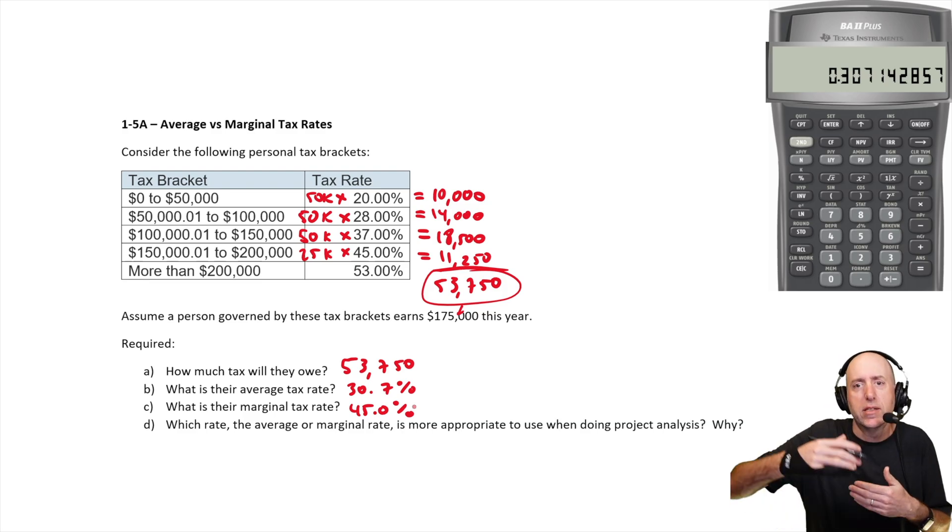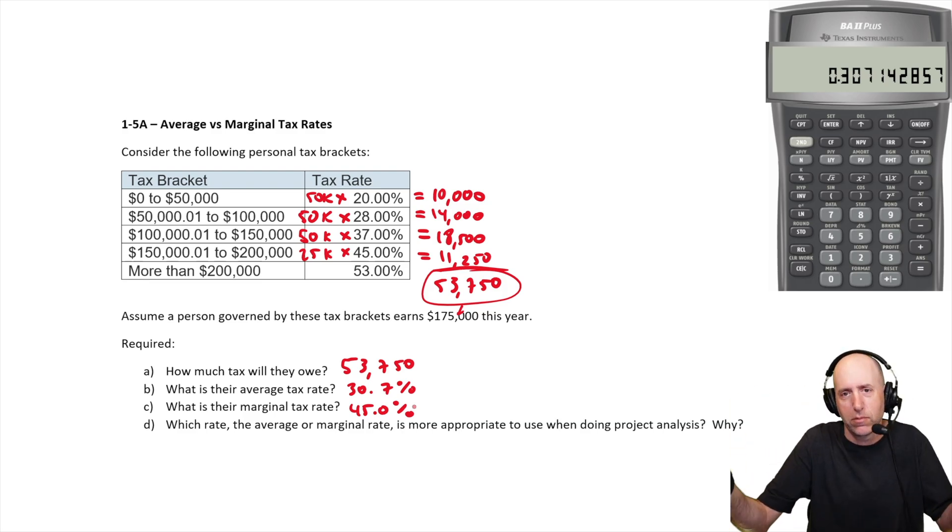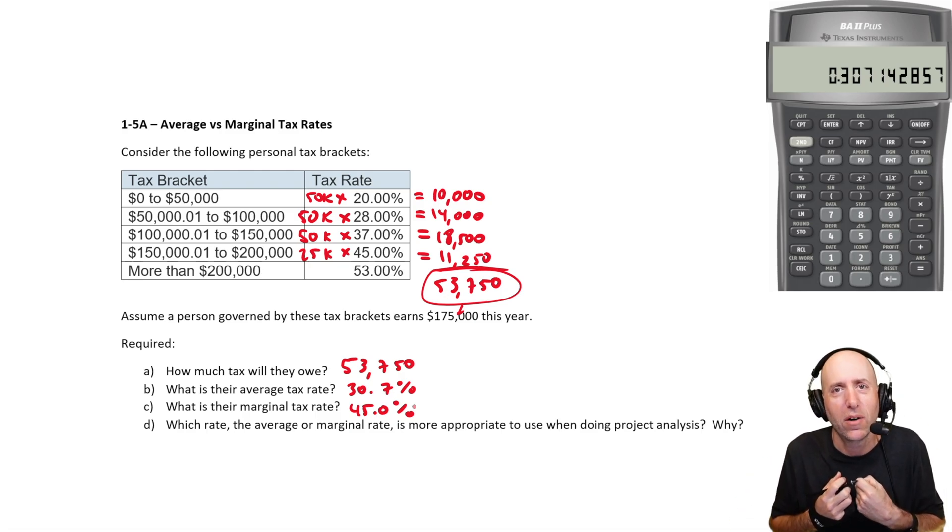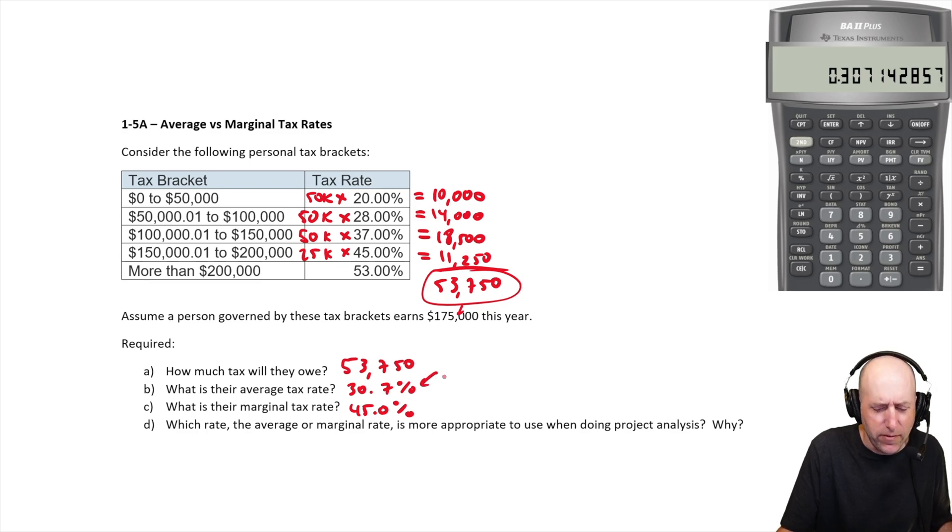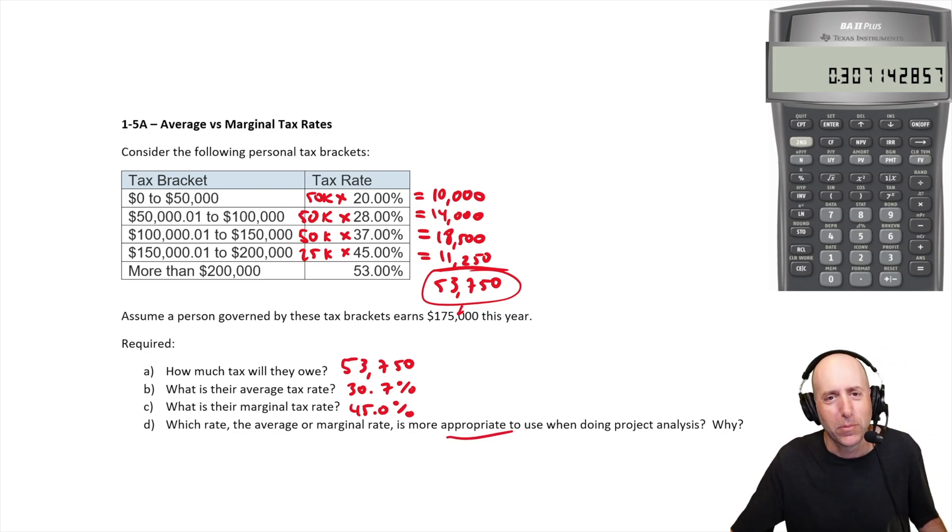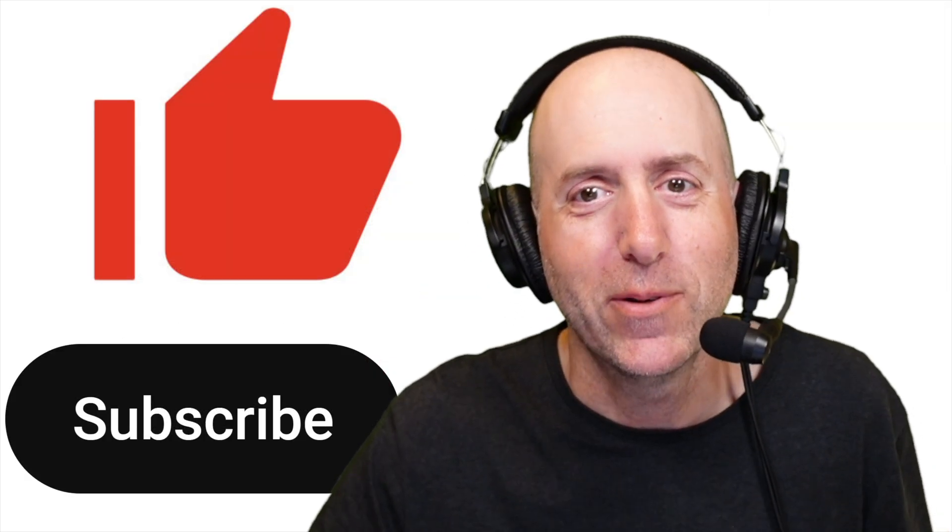Let me explain why. When we're looking at new projects, we're looking at typically additional projects. So it's like that new consulting gig. If I bring in $10,000 extra, what am I taxed at? The number 30.7% doesn't mean anything to the new project. All new dollars that this company brings in are going to be taxed at 45%. So that's the number you use in project analysis. That's the most appropriate number to use.